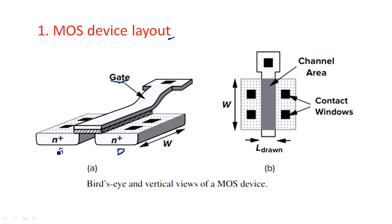Unlike the BJT — bipolar junction transistor — where the doping concentrations of the emitter, base, and collector are all different, in the MOSFET the doping concentration is common across the source and drain layers. The gate acts as the input terminal where it has a contact shown in black. The black color indicates the contact cut here for the source and drain as well.